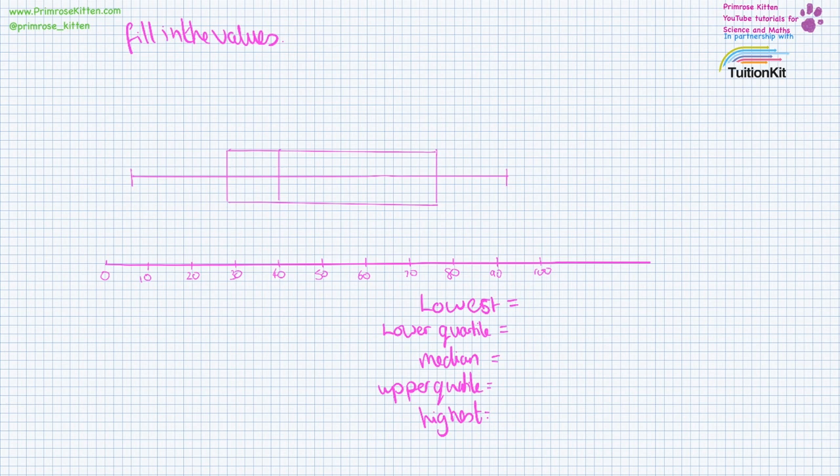Here we have a box and whisker plot where we need to find the lowest value, the lower quartile, the median and the upper quartile.